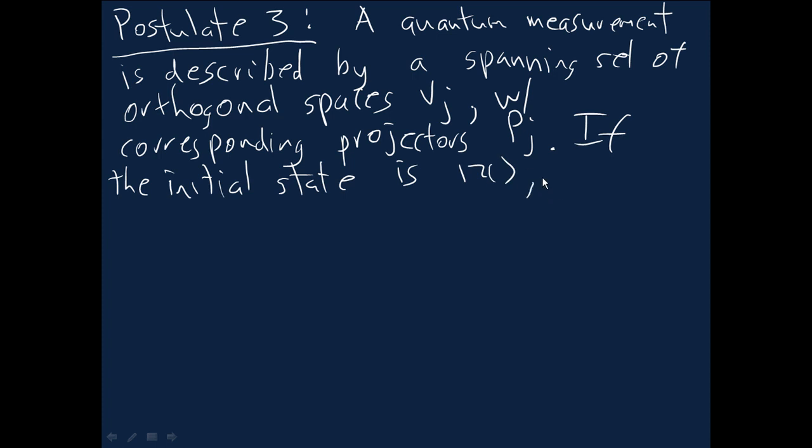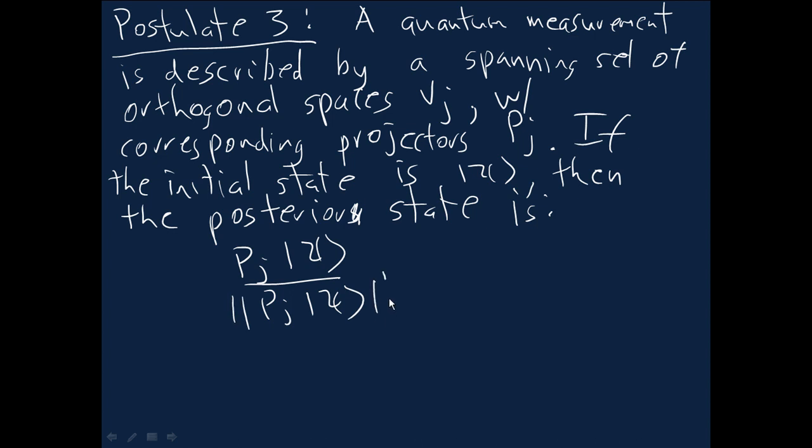The posterior state is Pj psi divided by a normalizing factor, the length of Pj psi, so it has a unit norm. And the corresponding probability is just given by Pj psi all squared, so the square of that normalizing factor.